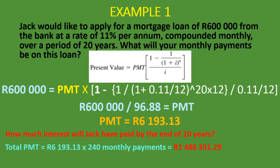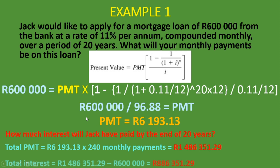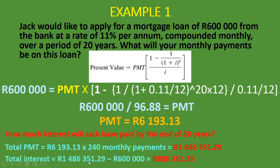We can now solve how much interest he has paid in total. He took out a loan of 600,000 Rand, so we take the total amount paid minus the mortgage loan principal. The total interest is 1,486,351 Rand 29 cents minus the 600,000 Rand loan, giving total interest of 886,351 Rand 29 cents. He has paid more interest than the actual loan he took out — that is the power of compounding, which we covered in a separate lesson.